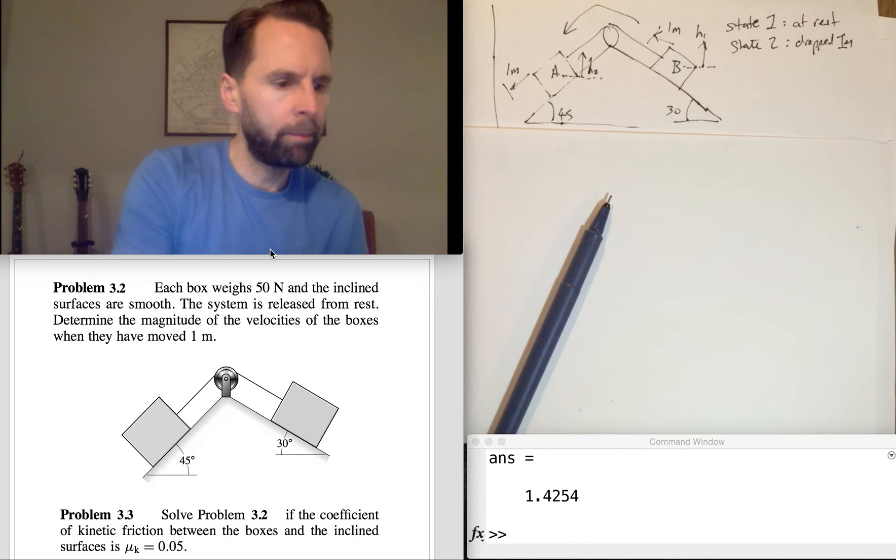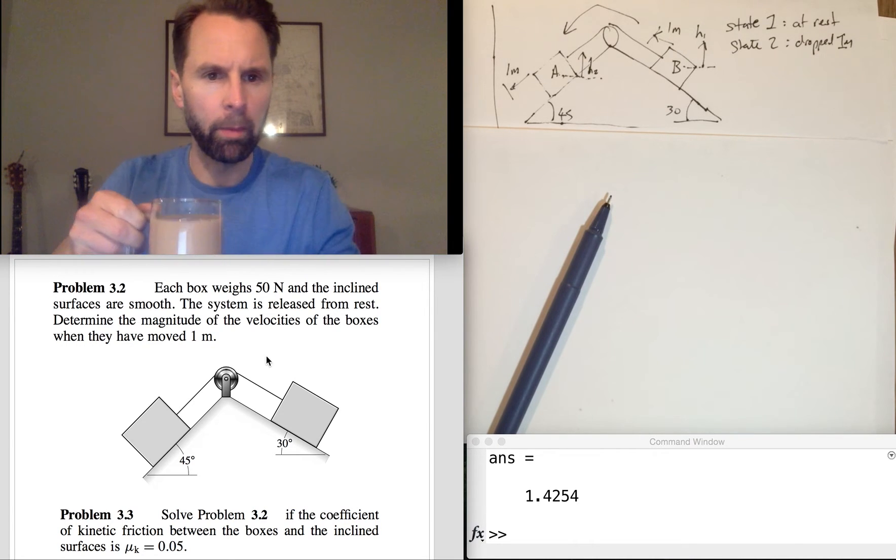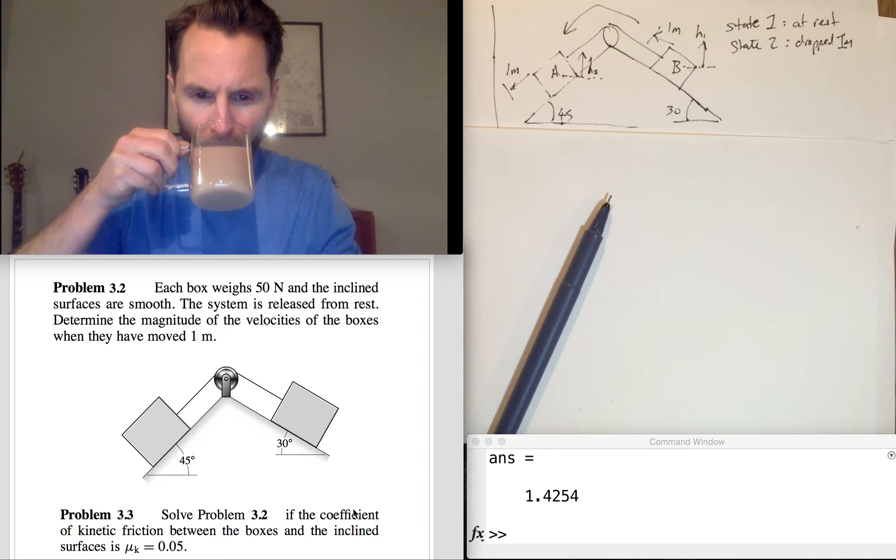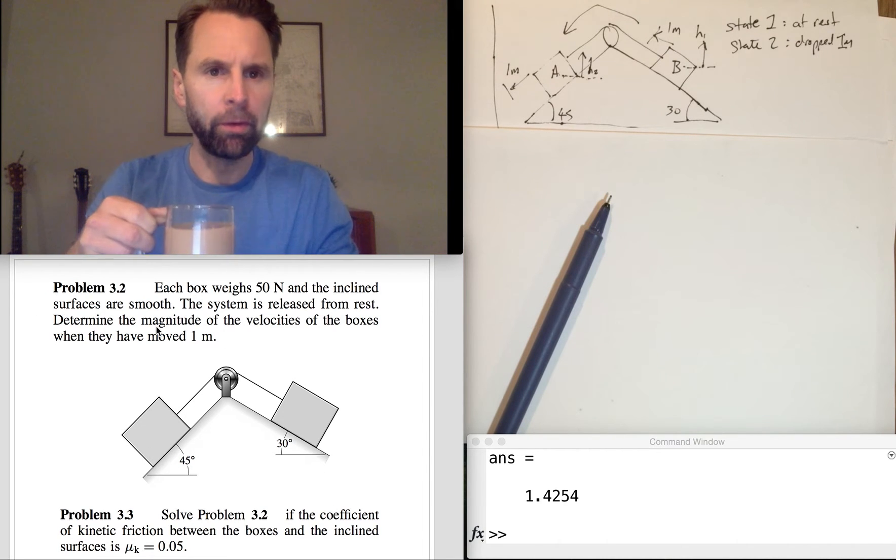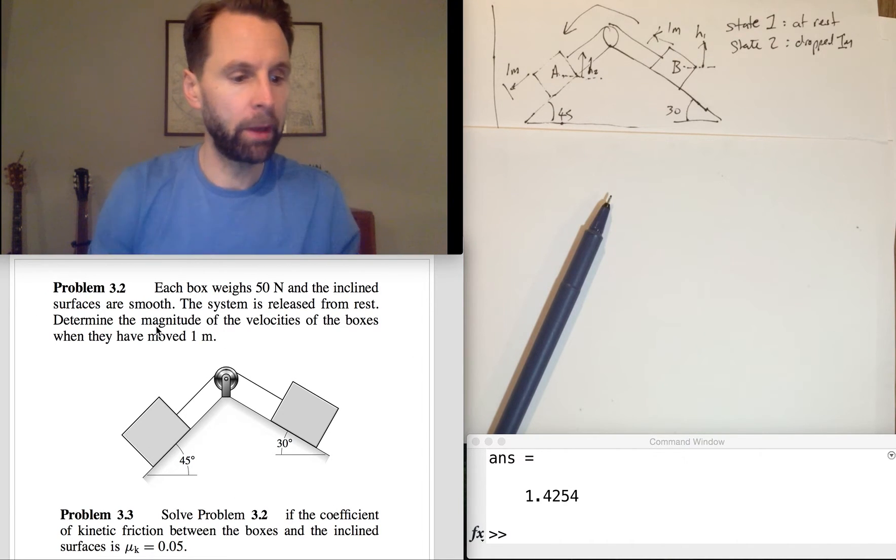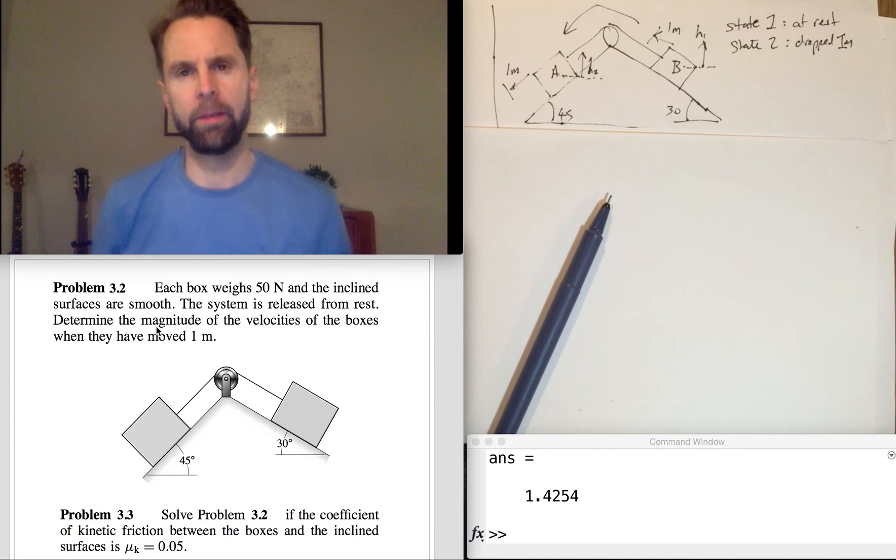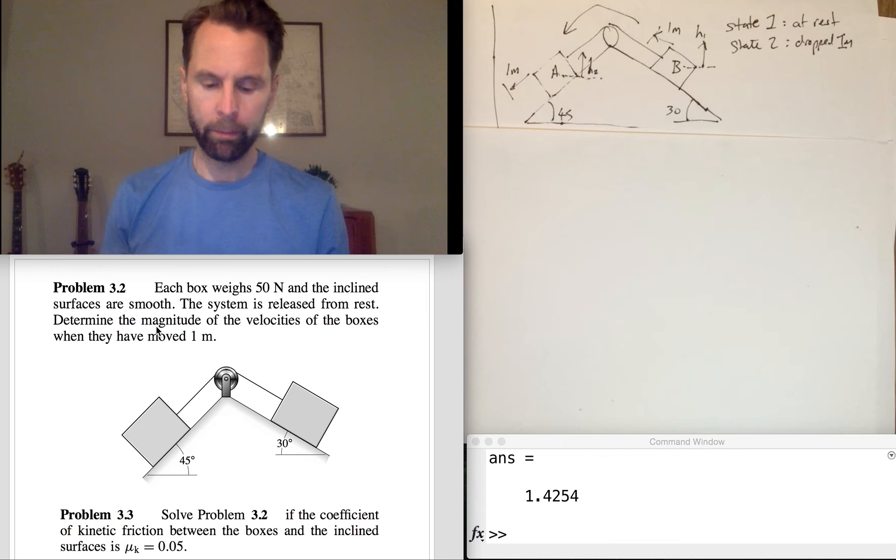This is problem 3.3. We've just been through 3.2 and it asked us to work out the final speed once these boxes have rolled or slid down the slope one meter. This one has slid down one meter and this one has slid up one meter, and it asked us to calculate the velocity which we did assuming that there were no non-conservative forces.